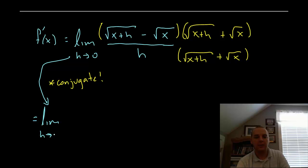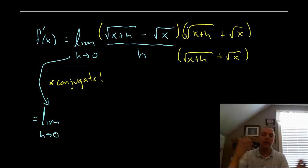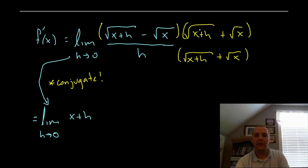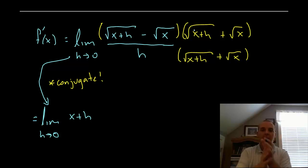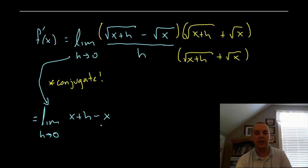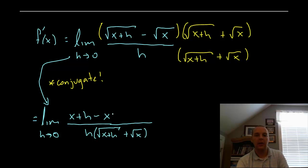Let's do the algebra and see how the numerator plays out. We FOIL the numerator: square root of x plus h times square root of x plus h is the square root of x plus h quantity squared — the square and square root cancel, giving us x plus h. The outer and inner terms are the same expression with opposite signs, so they cancel. Then minus square root of x times square root of x is minus x, all divided by h times the quantity in parentheses.